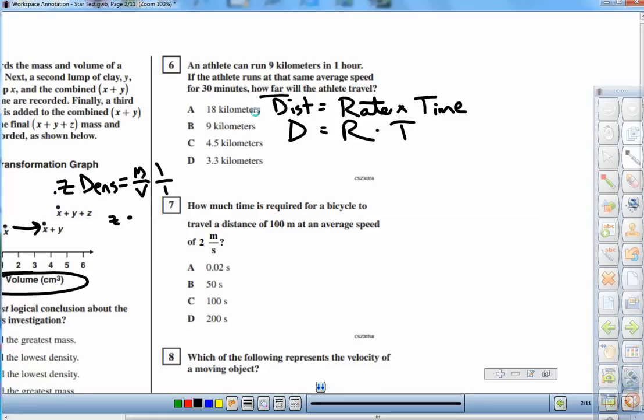So, how far does he or she go? Well, what is their rate? 9 kilometers in one hour is a rate, because a rate is an amount per time. So we'd put 9 kilometers in one hour. Multiply it by the time, well, 30 minutes. We'd better change those minutes, though, to hours.